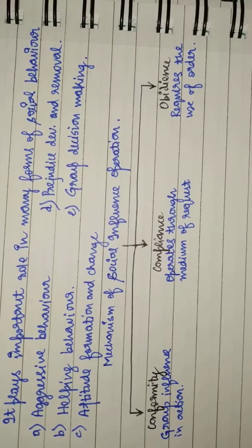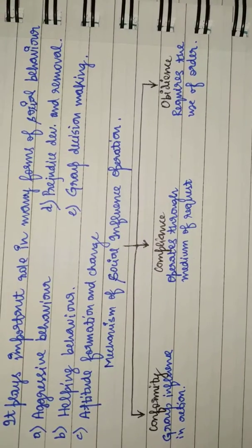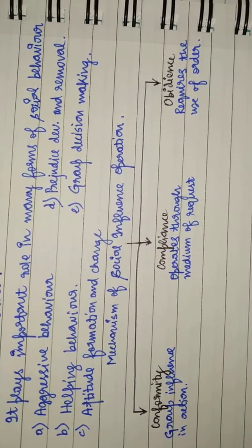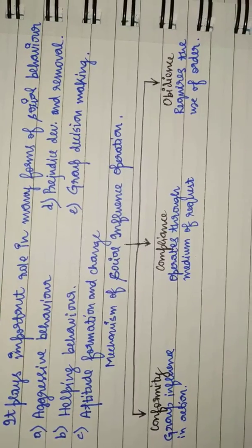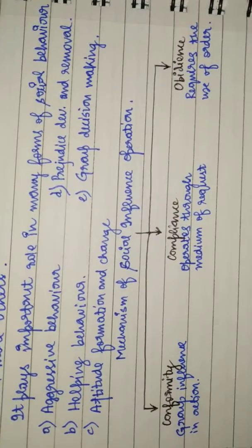Conformity is group influence in action. Compliance operates through medium of request. Obedience requires the use of order.